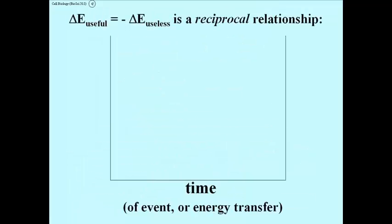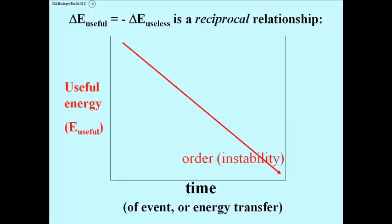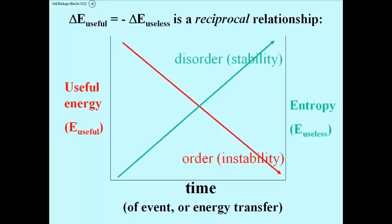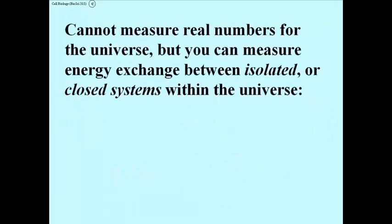This equation establishes a reciprocal relationship between the two quantities. Graphed, useful energy is always declining and useless energy is always increasing reciprocally. However, you can't really measure real numbers in universal terms — what you can do is measure the exchange of energy between isolated or closed systems within the universe.